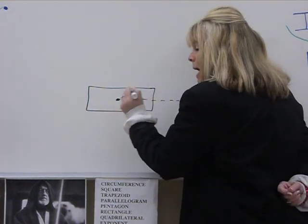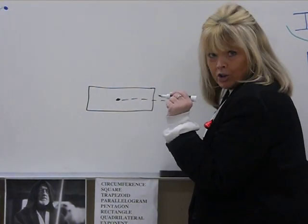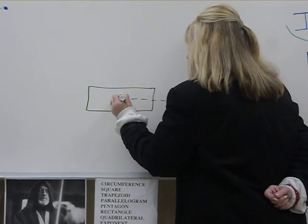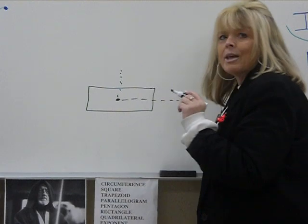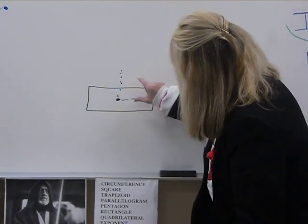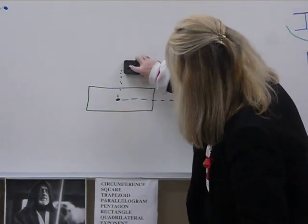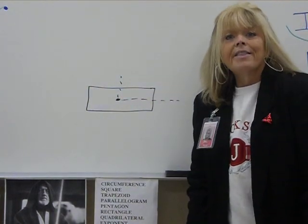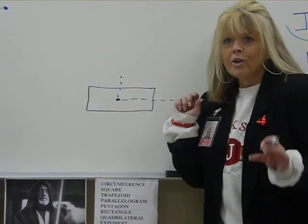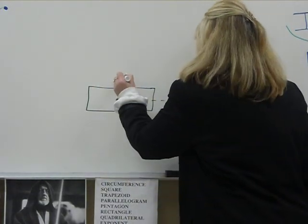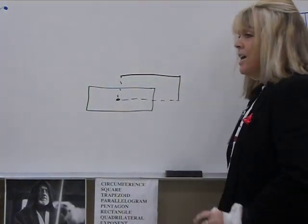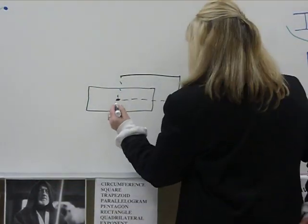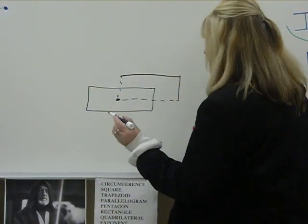Next step: you go back to the dot. You always go back to the dot and you draw another dotted line up, the same width. Then you complete this rectangle with solid lines.